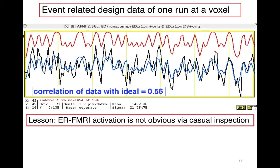Here's some event-related data. In this case there were four different related visual tasks, and the ideal model for those is given in the red curve at the top, which by itself looks pretty noisy. This is the single best voxel fit in the brain of this subject. The blue curve plots the fit to the black data curve, and you can see it actually goes up and down in relative synchrony. The correlation coefficient of the fit is 0.56, which is really very high — more commonly in strong event-related fMRI data it's going to be about 0.2. So this is a really good fit, and it still doesn't look so exciting. The real lesson is simply that event-related fMRI activation is not obvious to the eye.